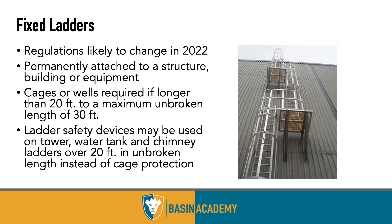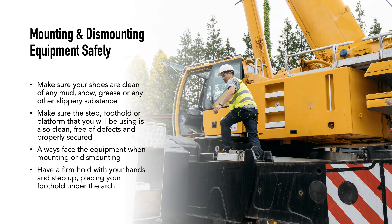Fixed ladders must be permanently attached to the structure. Those 20 feet or longer require a cage or equivalent, with a maximum unbroken length of 30 feet. The design shown here includes a platform at the break point — you get off at each rise, step to the platform, then continue up the next section — which limits the potential fall distance.